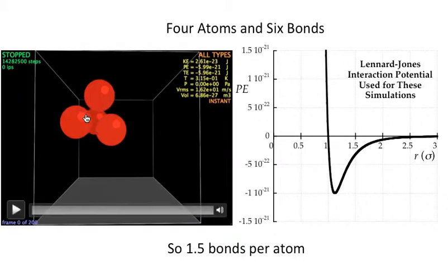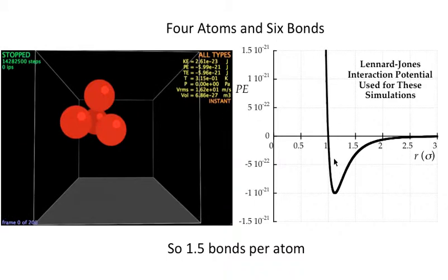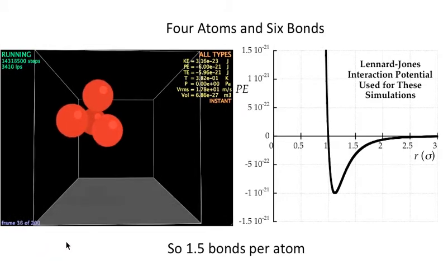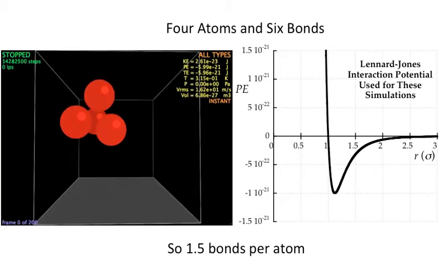What about four atoms? Well you can count them up, it turns out there's six bonds, six neighbors, individual distinct neighbors. Potential energy? Look it up. It's minus six, six bonds, six of those. I can start this up so you can watch them bounce around a little bit. Four atoms, six bonds is 1.5 bonds per atom. So as we put more atoms together there's more ways of those atoms connecting up and we end up with more bonds per atom. I'm going to go through the rest of it kind of quickly.